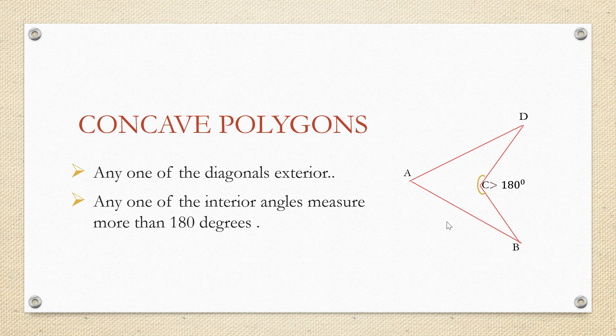B and D are two non-adjacent vertices and if we join these, it forms a diagonal. And if we see here, the diagonal is exterior to the polygon. So, it is meeting both the conditions which makes this to be a concave polygon.